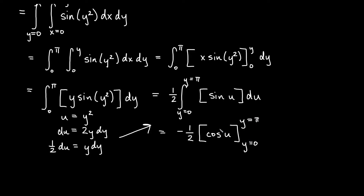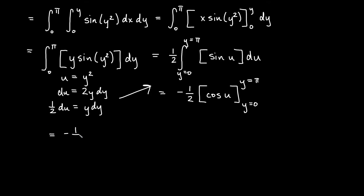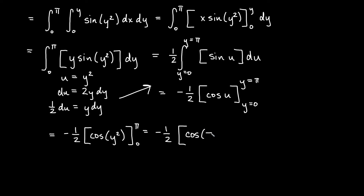We'll back substitute from u to y: negative 1 half cosine of y squared from 0 to pi. Plugging in pi gives cosine of pi squared — most people don't know what cosine of pi squared is from the unit circle, unlike cosine of pi — so we'll just leave that. Then minus cosine of 0, which we should know.